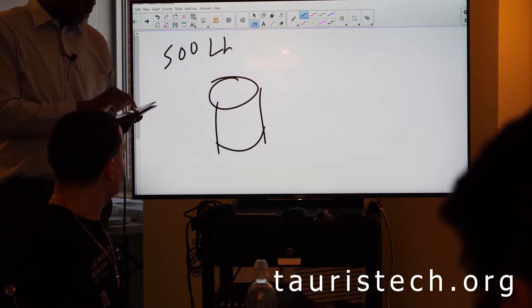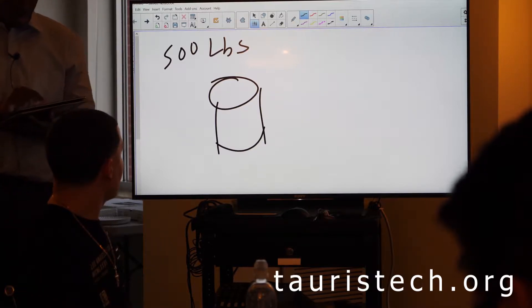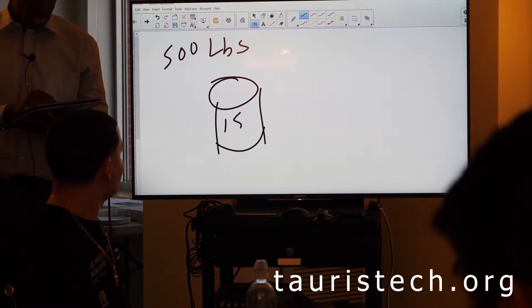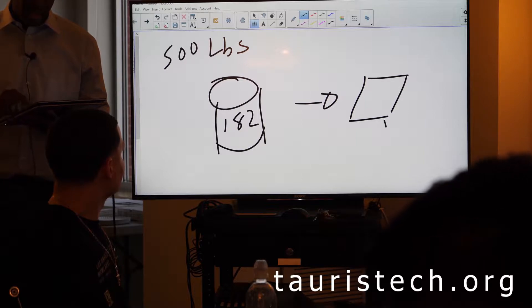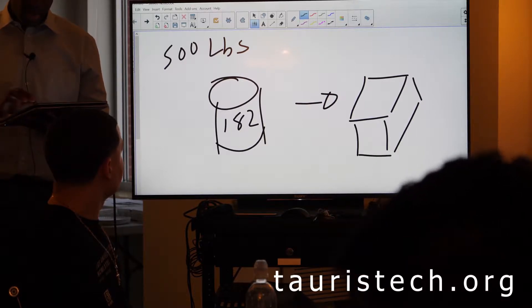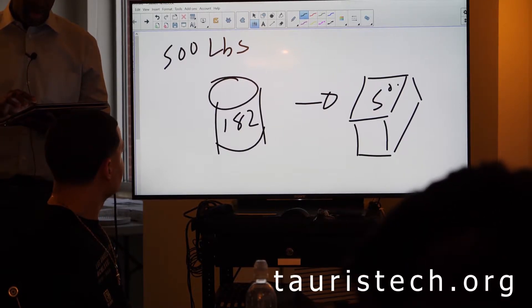I have, let's say, 500 pounds of water. We're going to call it 182 degrees and we want to go to ice at let's say 5 degrees Fahrenheit.